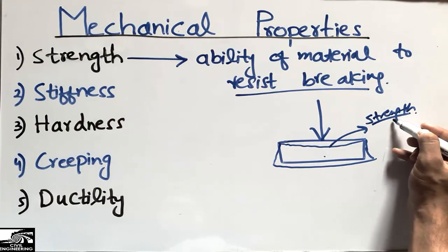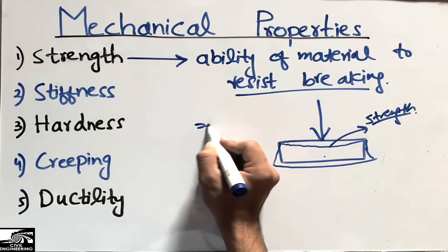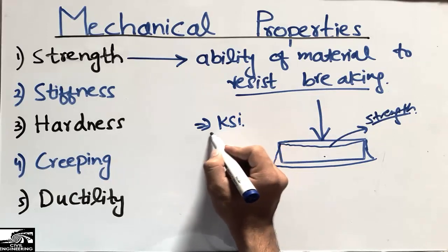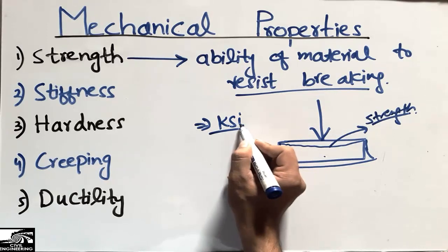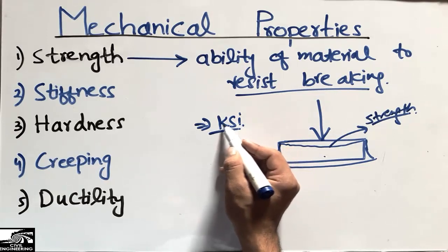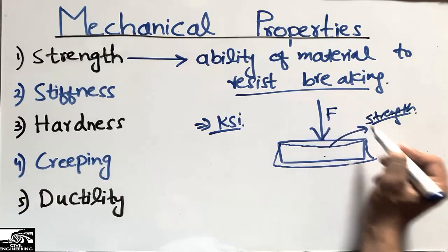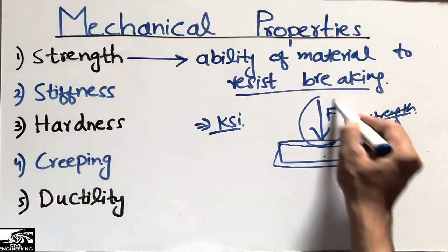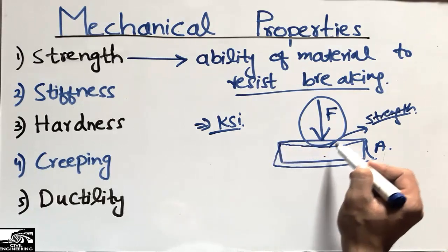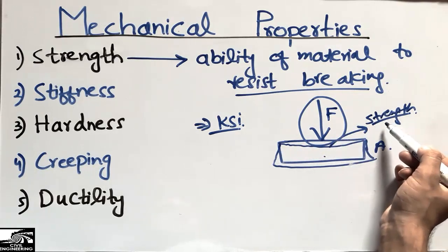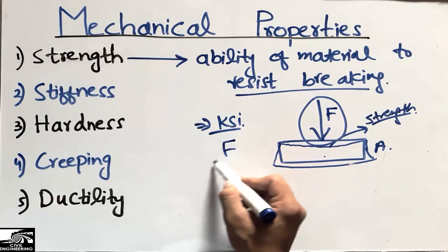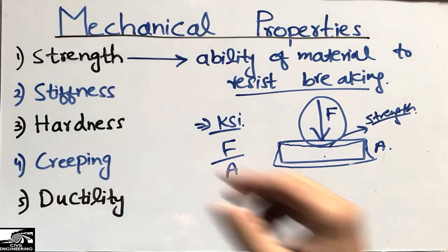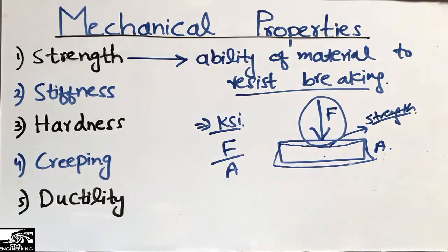Strength is usually measured in KSI — kilo pounds per square inch. The unit means force per unit area — the force acting on the area of the material. The load acting on this material up to when it breaks, measured as force per unit area, is what we call the strength of material.